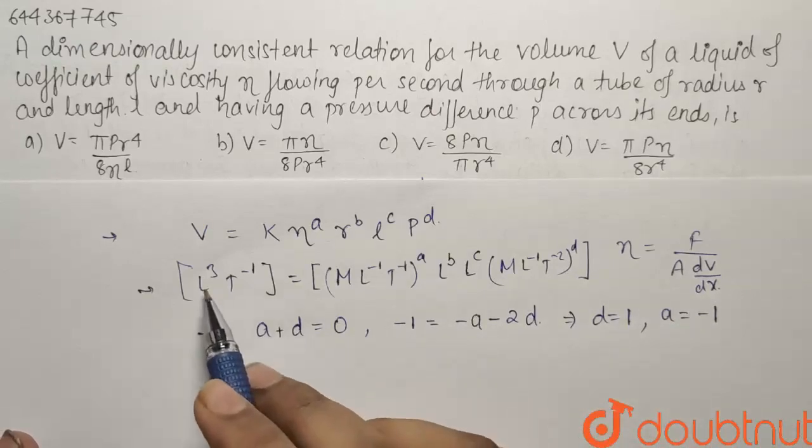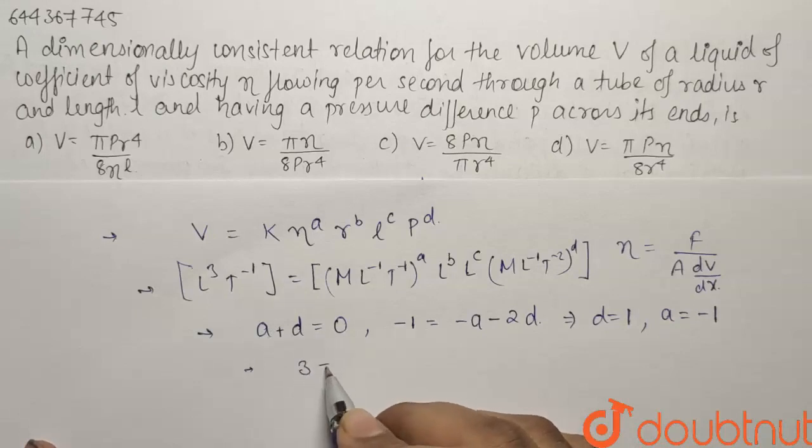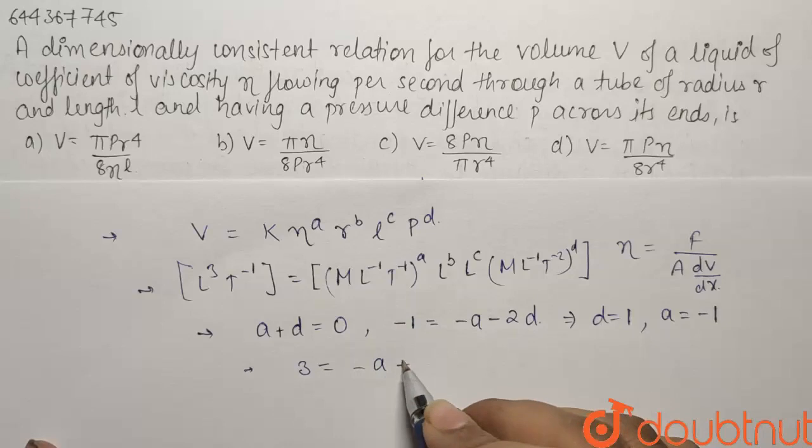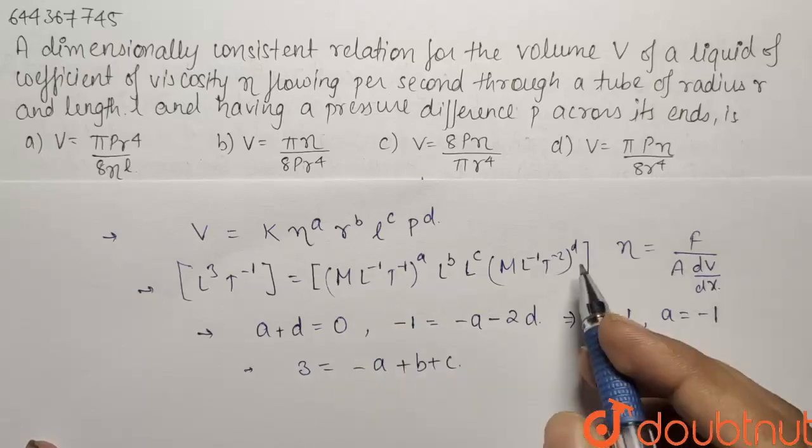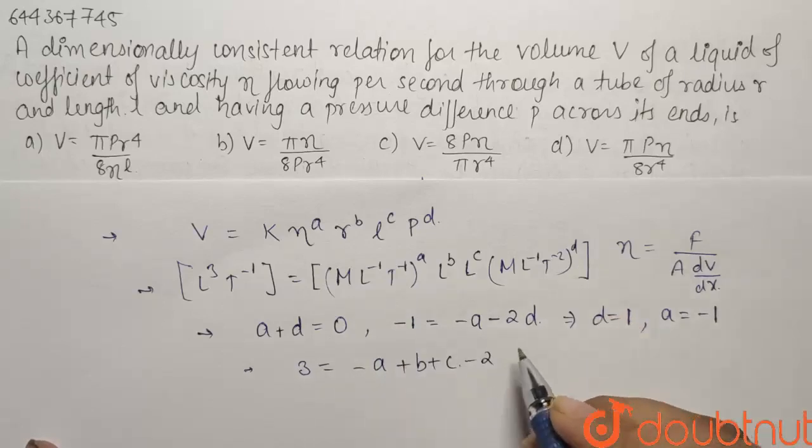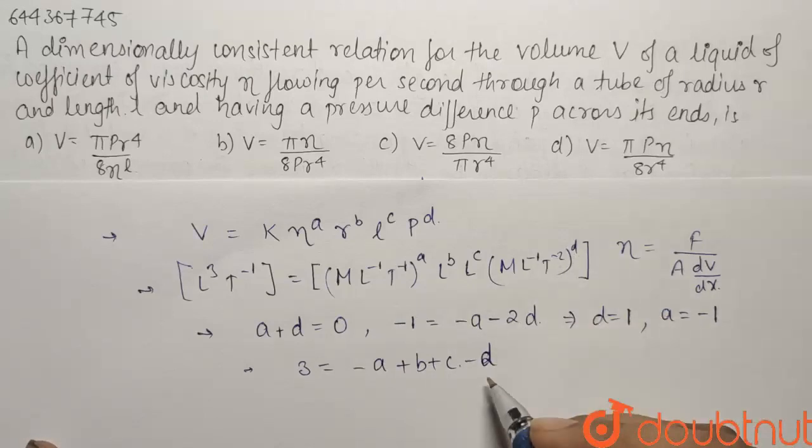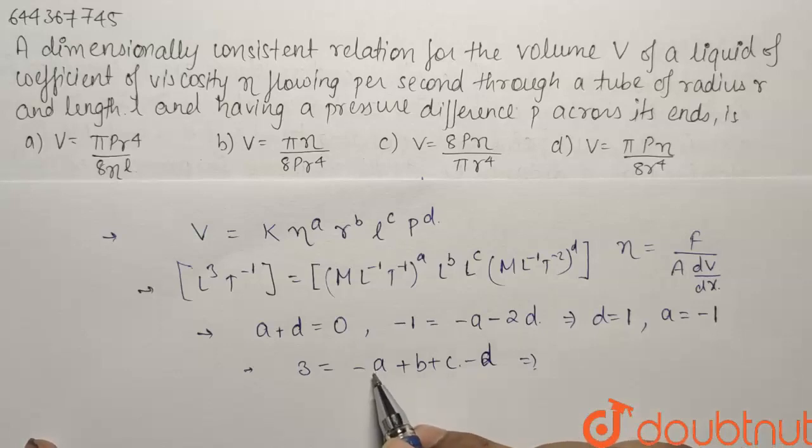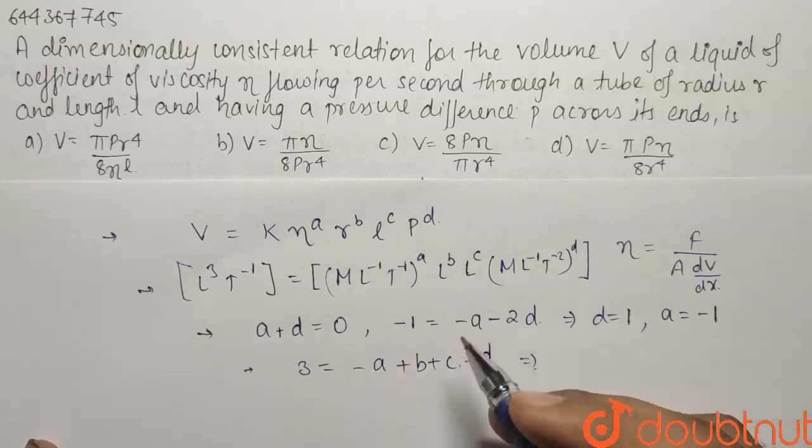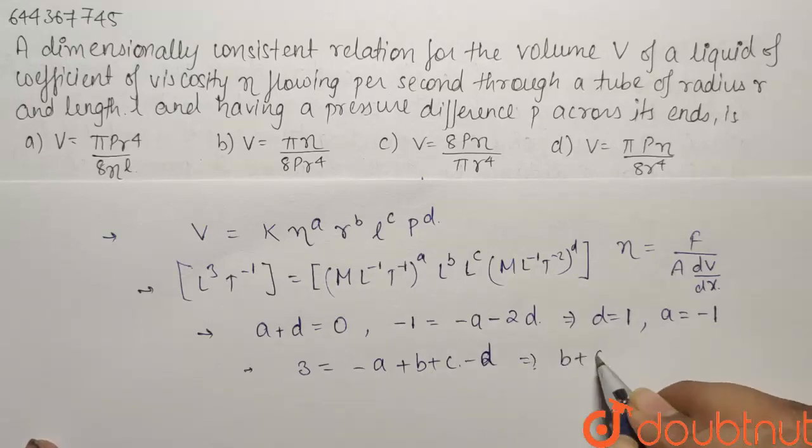So if I use the equation of length so LHS is 3 and it will be equals to minus A plus B plus C minus D, that is minus 1 into D. So if I put in the values D is 1 A is minus 1 so minus A and minus D will cancel out what will be left with B plus C will be equals to 3.